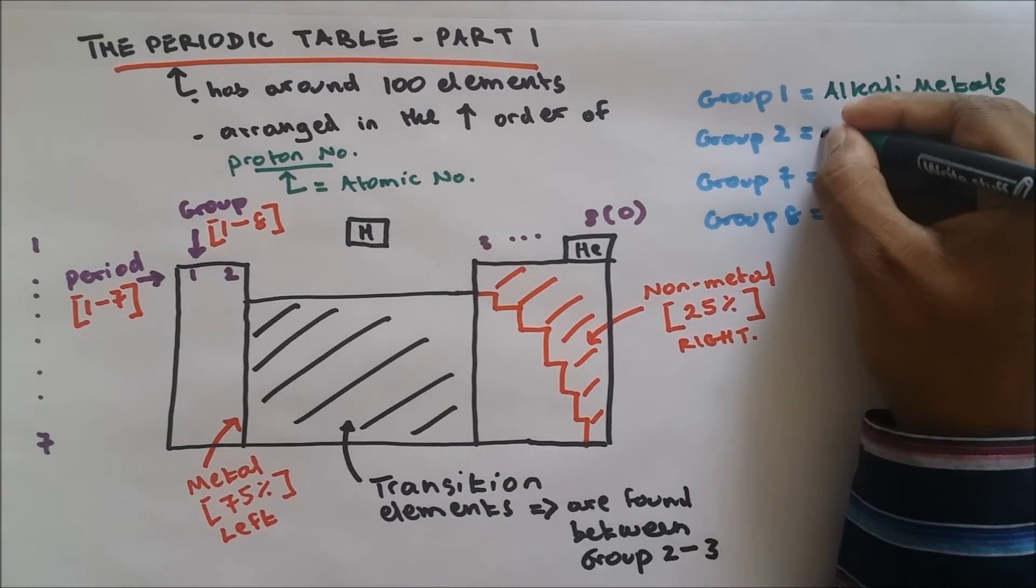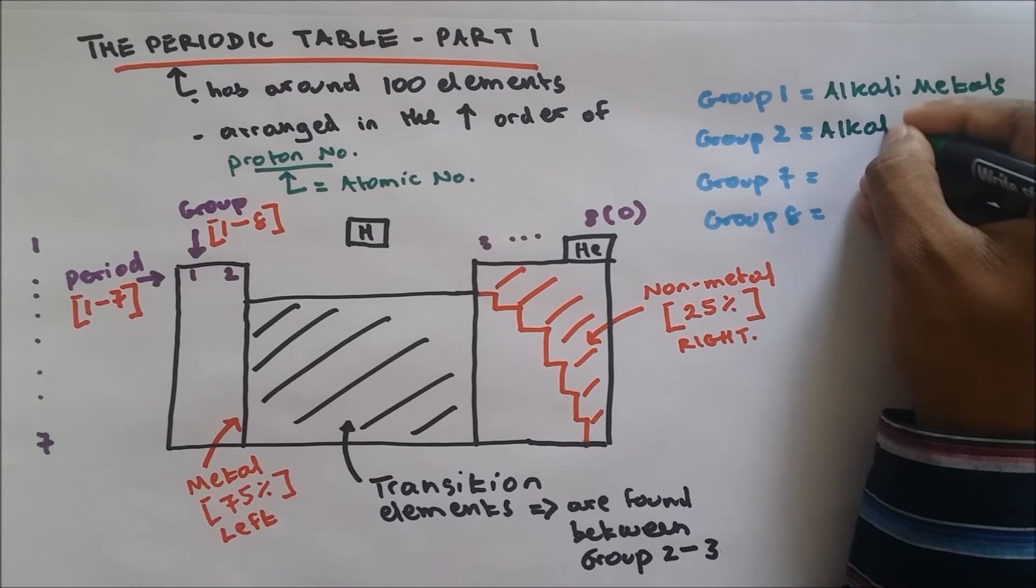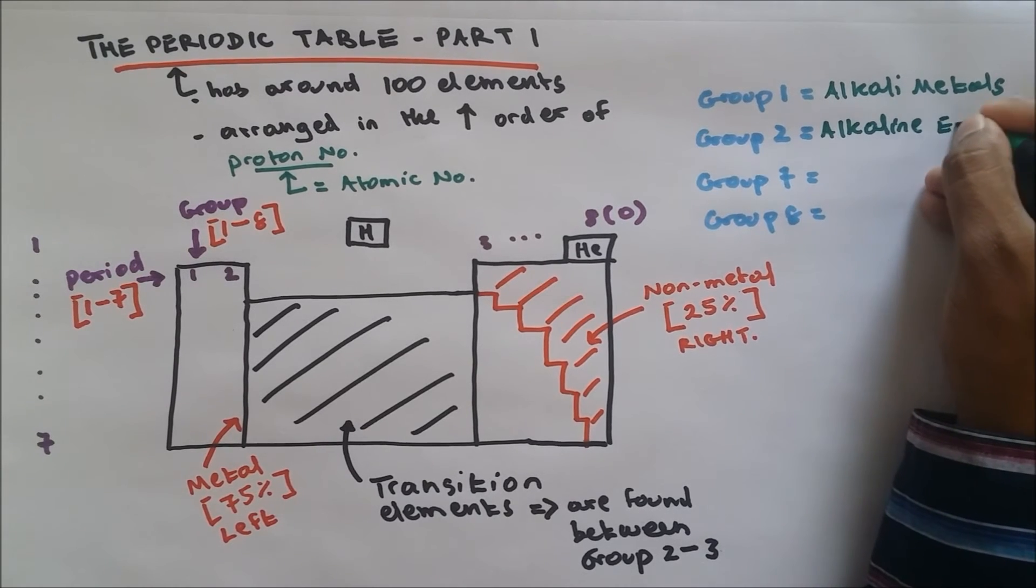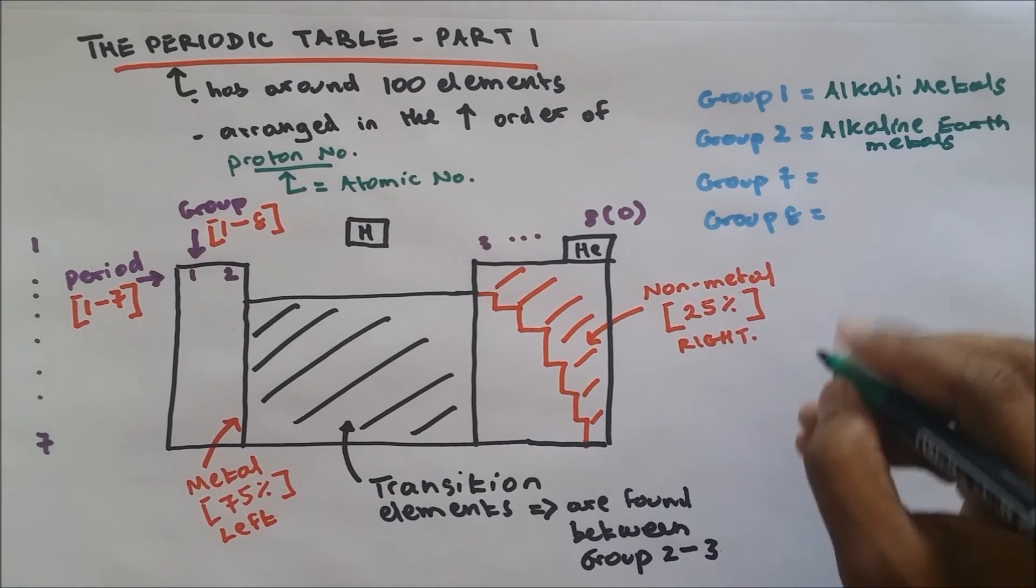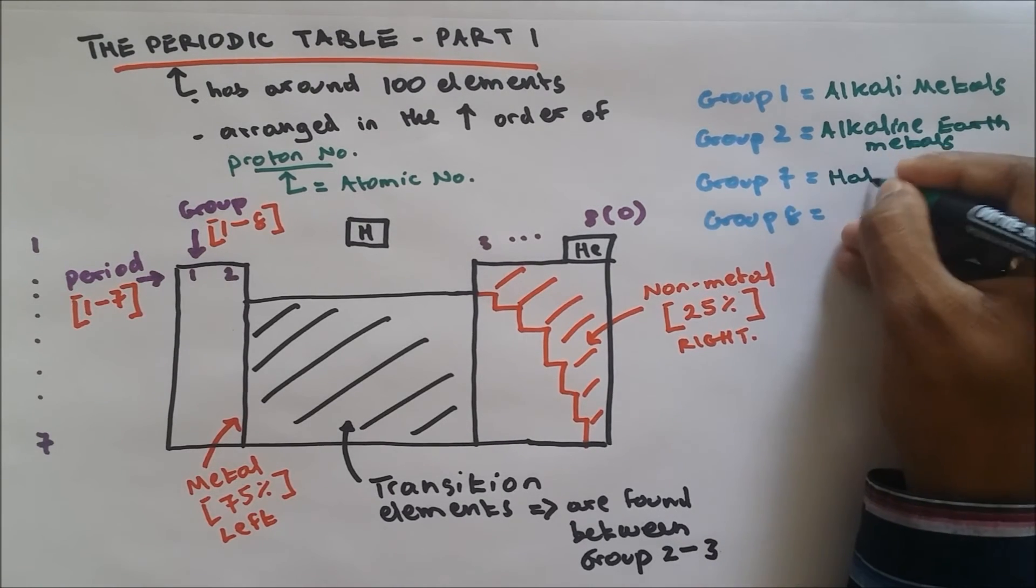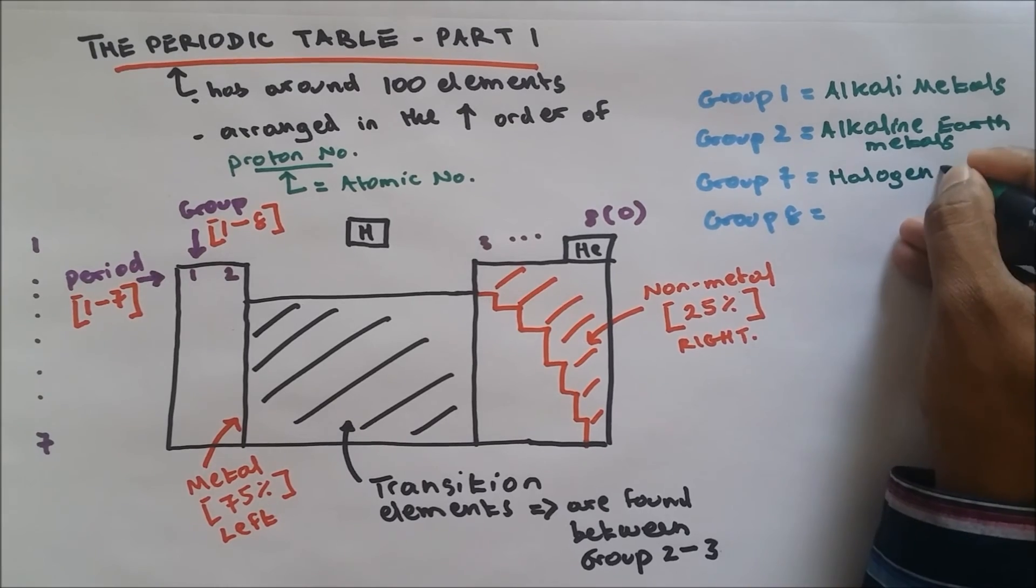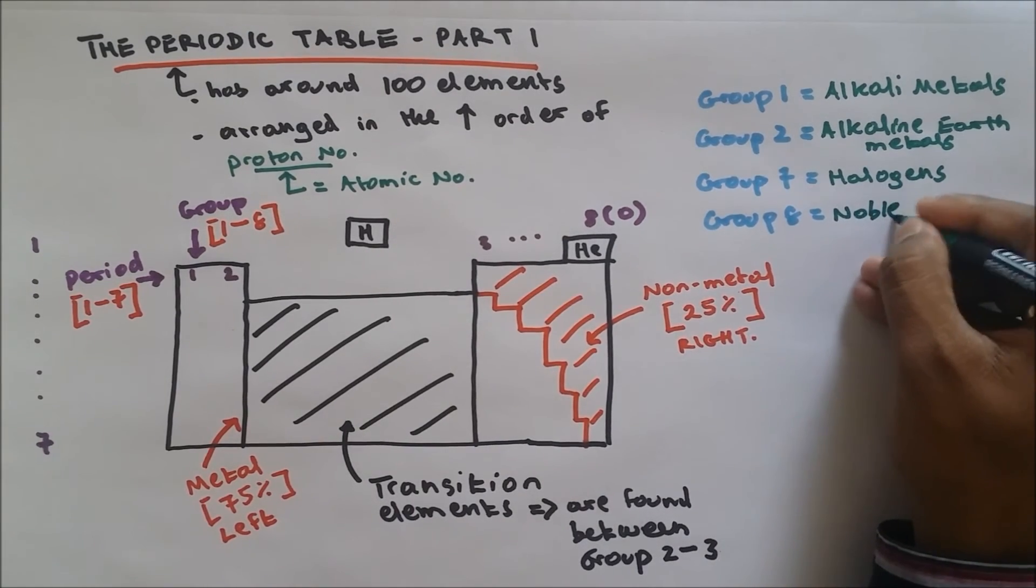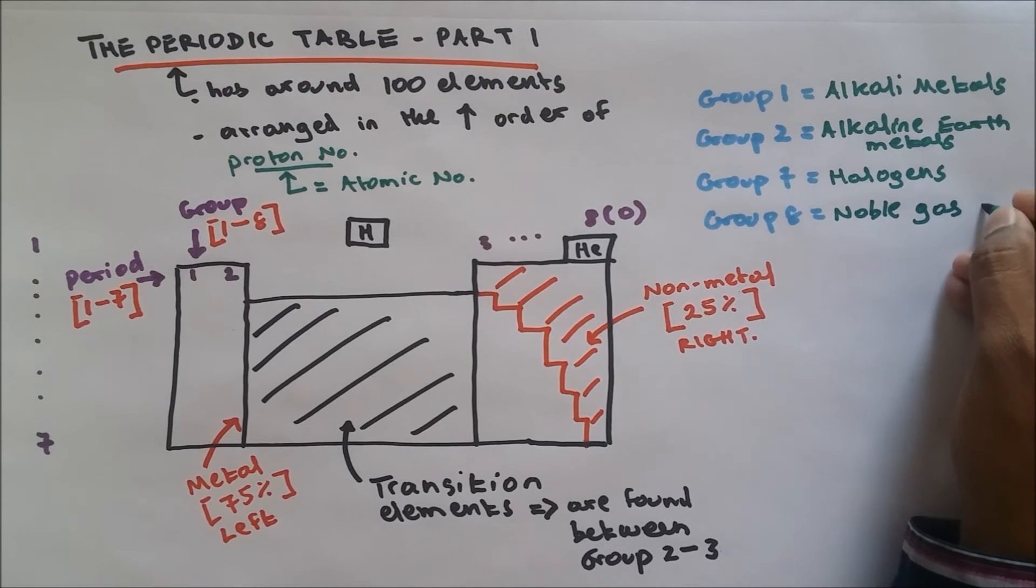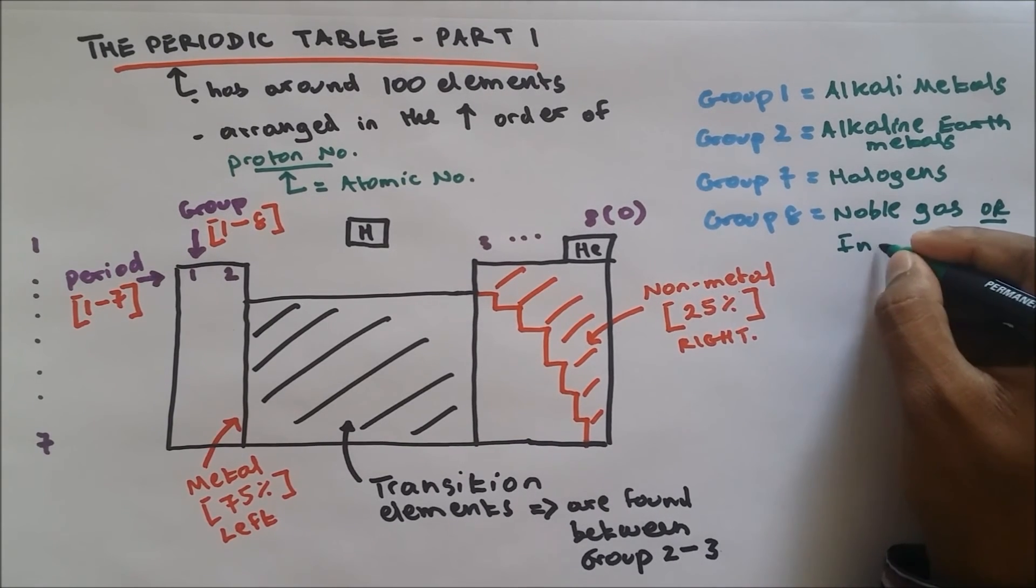Group two, alkaline earth metal. Group seven, halogens. Group eight is called noble gas or it can be called as inert gas.